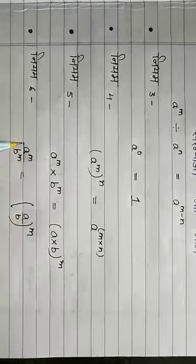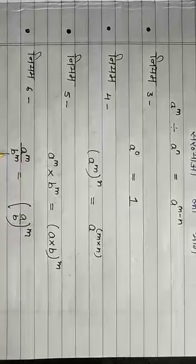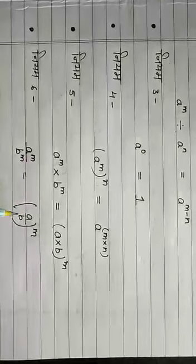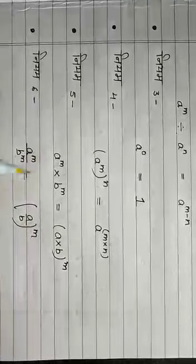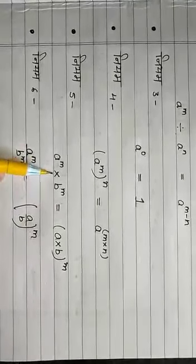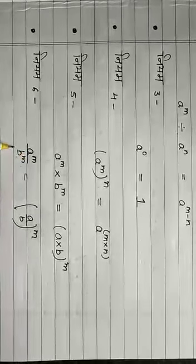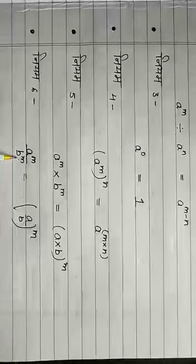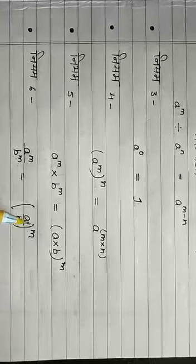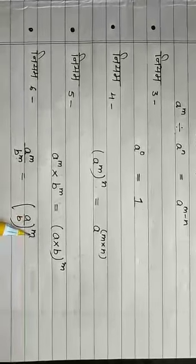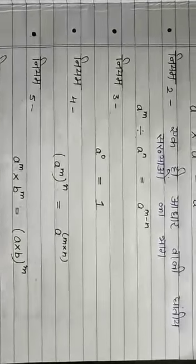नियम 6: A की power M upon B की power M बराबर (A upon B) की power M। यह नियम 5 और नियम 6 — multiplication और division पर based हैं। A और B दोनों अलग-अलग आधार हैं और इनकी घात समान है, तो इनको A upon B की power M के रूप में लिख सकते हैं। (Rule 6: A^M / B^M = (A/B)^M)